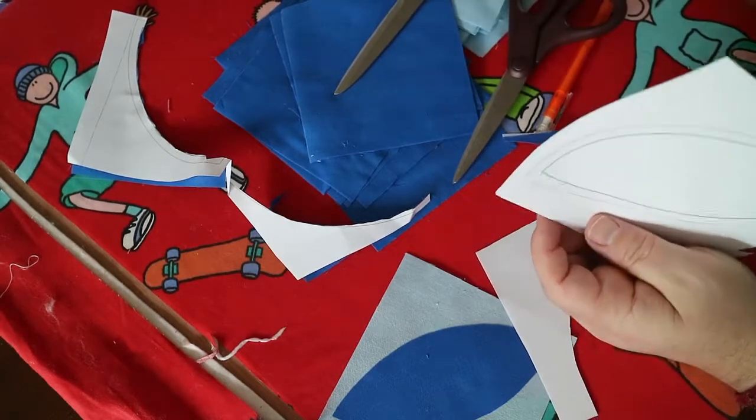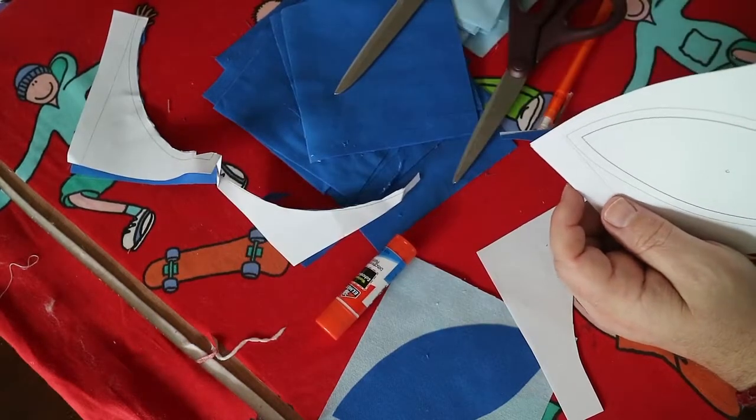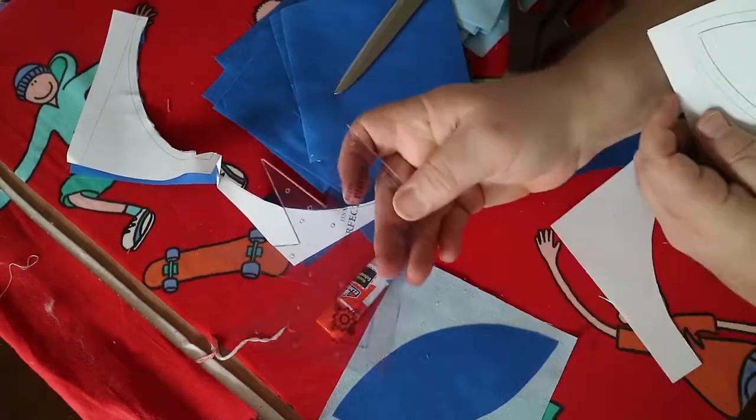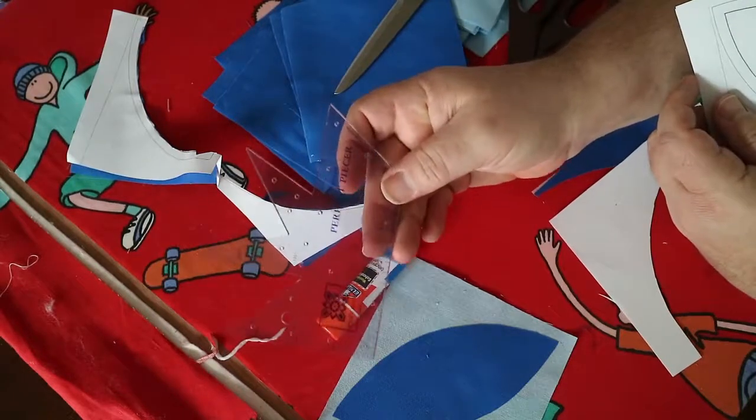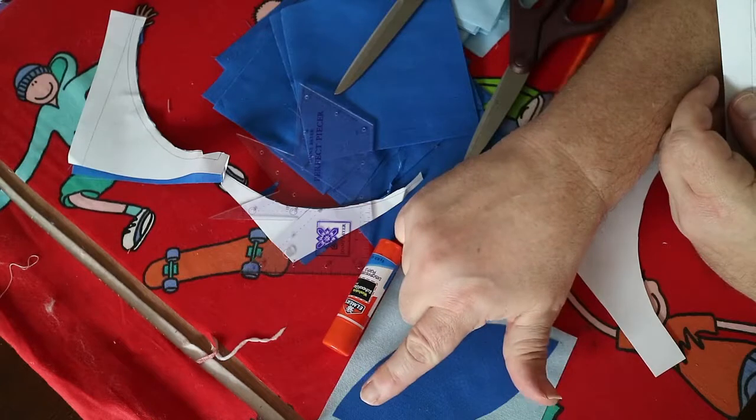Always remember, Elmer's glue is your best friend. And this tool really comes in handy working projects like this, so you get these perfect quarter inch seams in these points. No fudging.